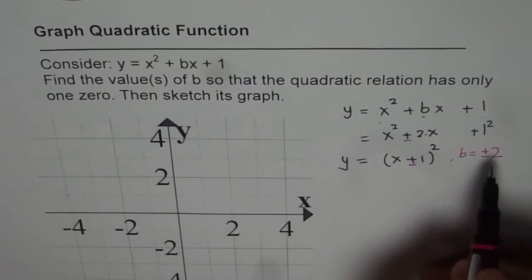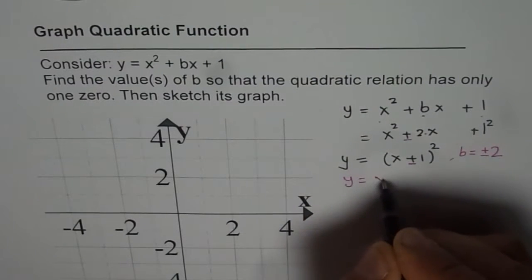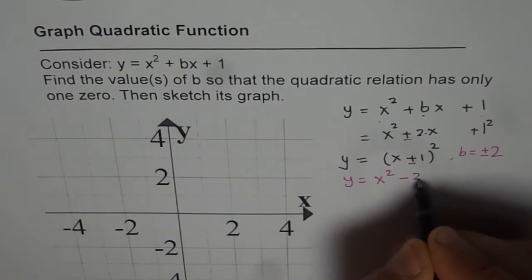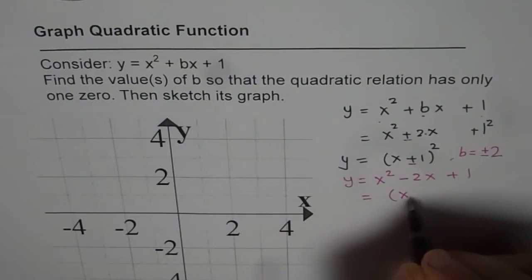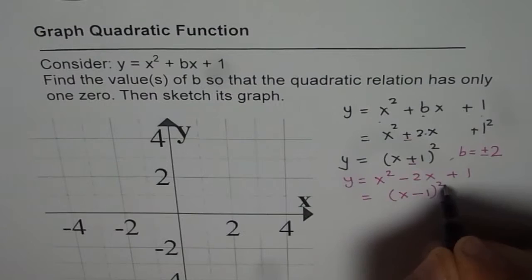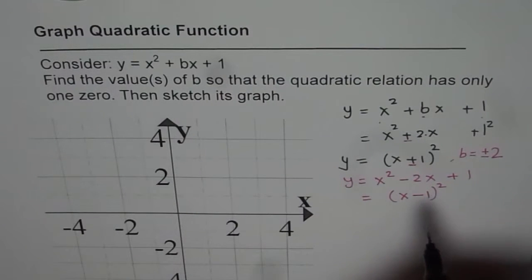So what I am trying to say, if b is plus 2 or minus 2, let me take y equals x squared minus 2x plus 1. Then what do you get? You get x minus 1 whole squared. So in both cases we get one zero and that is on the x-axis.